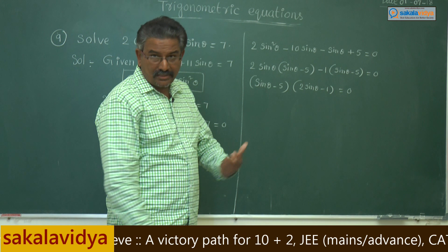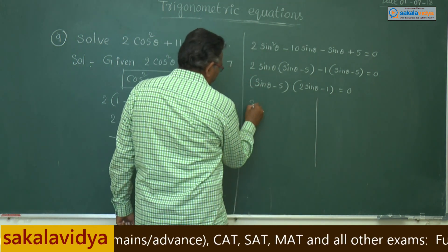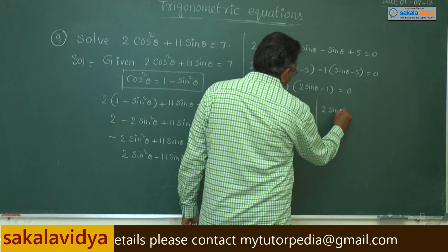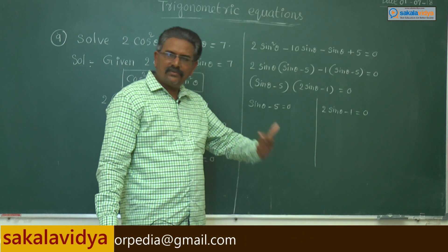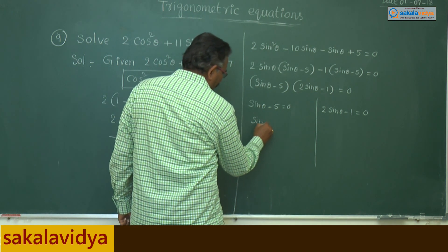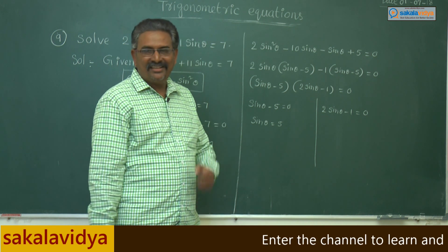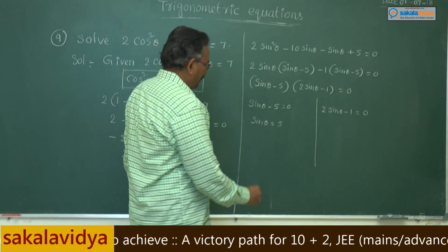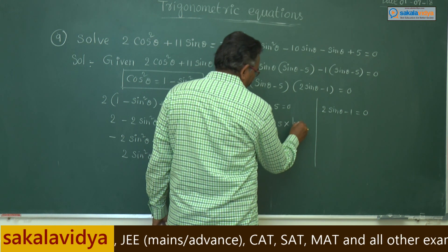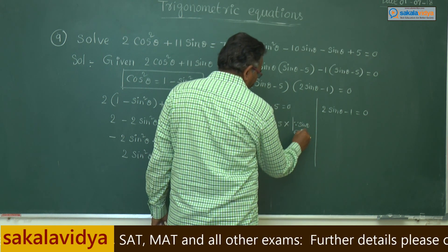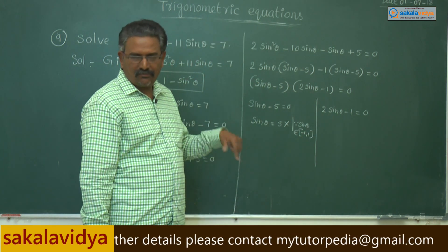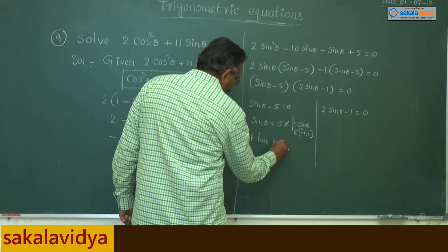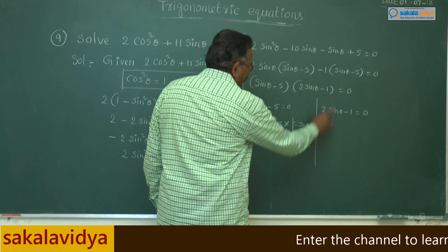Two cases arise. Case 1: sinθ - 5 = 0 gives sinθ = 5. This is impossible since sinθ lies between -1 and 1 for every real θ. Therefore, this case has no solution.